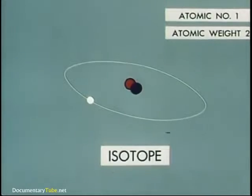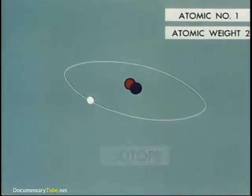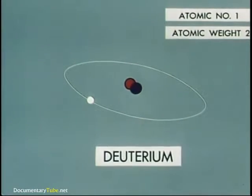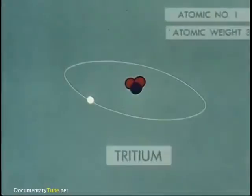For example, adding this neutron to a standard atom of hydrogen would produce this isotope of hydrogen known as deuterium. This is the hydrogen in heavy water. Adding another neutron produces a third hydrogen isotope called tritium.